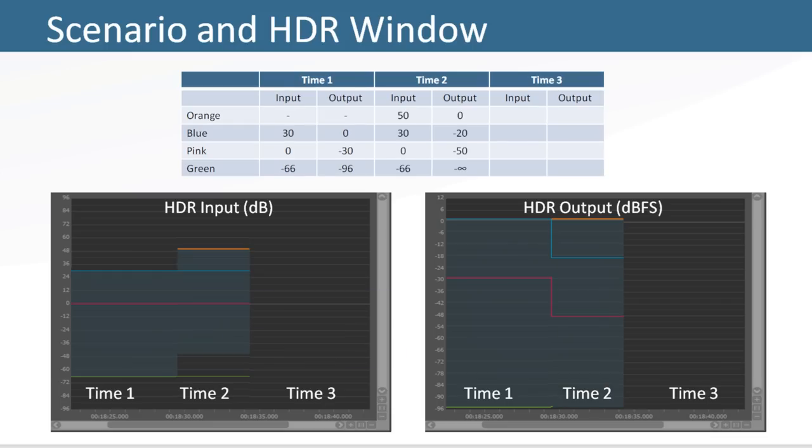Now, at time 2, the orange sound is the new loudest sound playing at plus 50 dB. Again, this sound is mapped to 0 dB on the output side, and the blue, purple and green sounds are scaled down proportionally. For example, the blue sound is now playing at minus 20 dB.